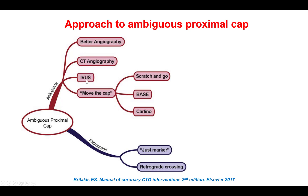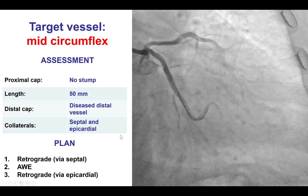Third, to do intravascular ultrasound to localize the proximal cap. Fourth, to do subintimal dissection and then re-enter into the vessel. However, this was not feasible here because of the previously placed stent. And lastly, to do a retrograde approach, trying to re-canalize in the retrograde direction.